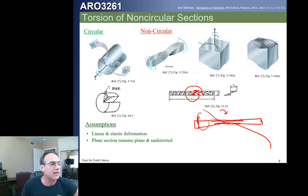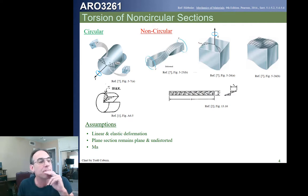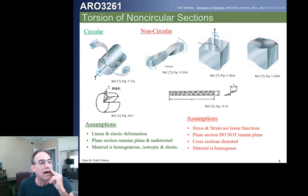We're going to find we end up with different assumptions. Those assumptions we had before, we're going to see that our stress and strain are no longer linear functions. Our plane sections do not remain plane. Our cross sections are distorted, even though our material is homogeneous, isotropic, and elastic. We're actually going to ignore all this, even though it's true and we need to be aware of it, when we come up with these equations.